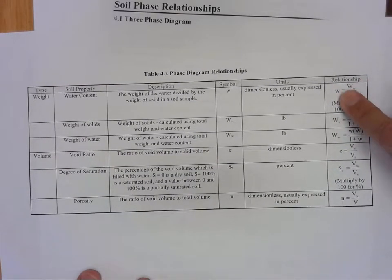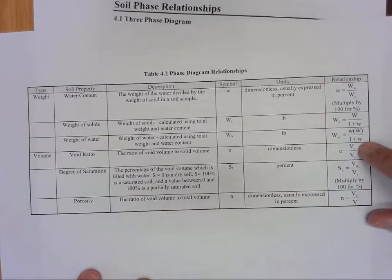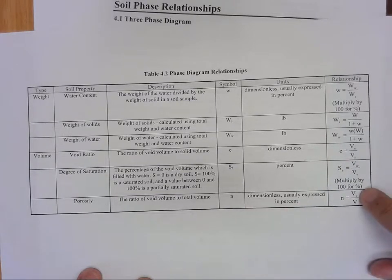So for instance, our water content is the ratio of the weight of the water to the weight of the solids. Our void ratio is the relationship, that ratio between the volume of the voids to the volume of the solids. And porosity is volume of the voids over the total volume.